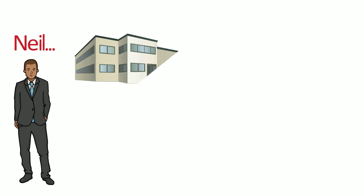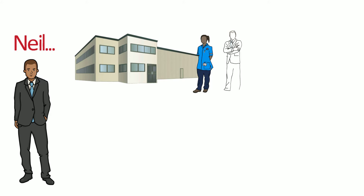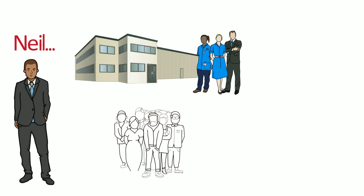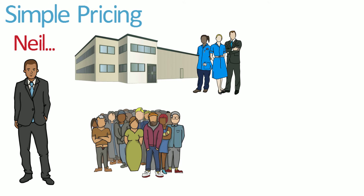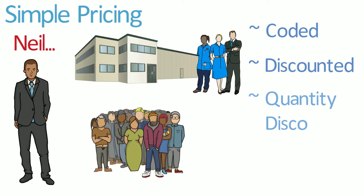Across the road is Neil. He runs a larger distribution business with multiple order entry clerks and many products. The order entry clerks are busy and need to be able to process sales orders quickly. There are also too many customers and stock codes to know which price to apply to the different customers. Neil uses simple pricing, which is automated and based on certain codes assigned to the customer and the stock item. Depending on the item, he can use coded, discounted or quantity discounted pricing methods.